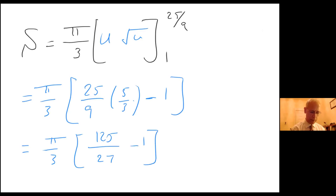And so this one I can rewrite as π over 3 times 125 over 27 minus 27 over 27. And that gives me π over 3 times, the 125 minus 27 gives me 98 over 27.